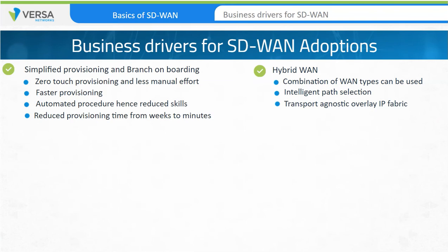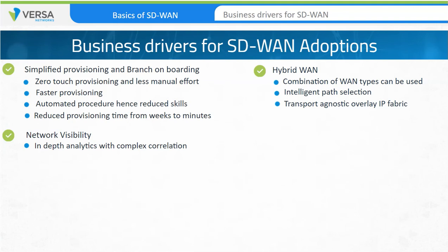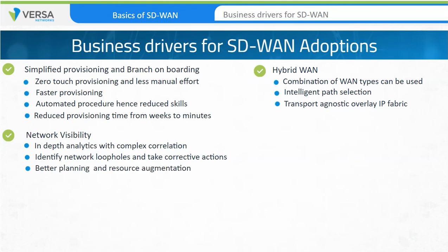The third business driver is network visibility. Next-gen WAN architectures provide in-depth analytics and visibility of network services with complex correlation on various performance parameters. This helps businesses identify loopholes in their present network architectures and take corrective actions, helping in better planning and resource augmentation to support growing business needs and increase the efficiency of the WAN environment.